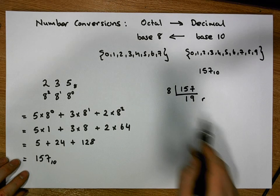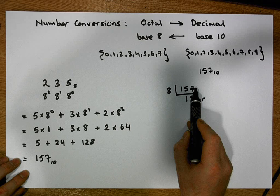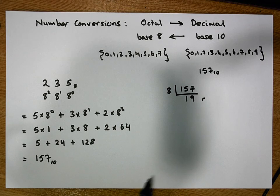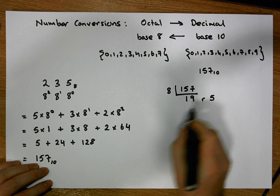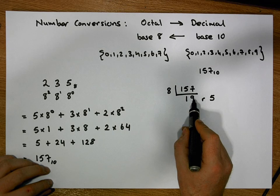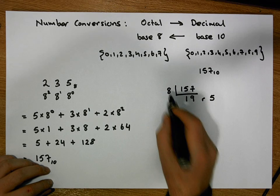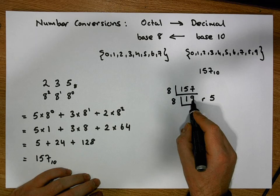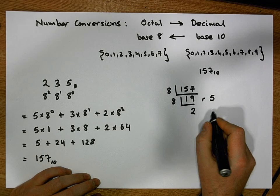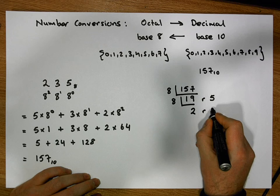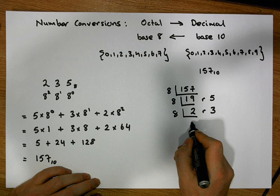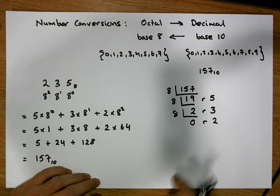To calculate the remainder: 157 minus 8 times 19 gives us a value of 5. So 8 goes into 157 nineteen times with a remainder of 5. Next, 8 into 19 goes twice with a remainder of 3. Then 8 into 2 — 8 won't go into 2, and the remainder is 2. We stop when the divisor won't go into our number any more times.